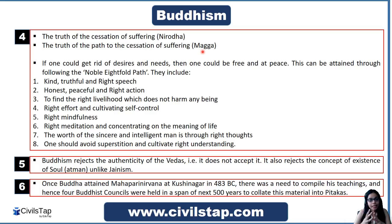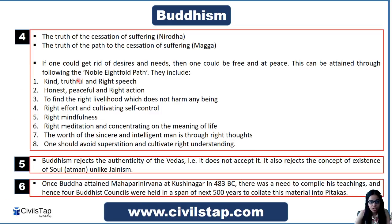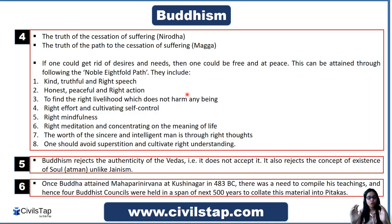To rid oneself of desires so that the Four Truths no longer afflict, Buddha taught the Eightfold Path. This includes: right speech (honest), right action (peaceful), right livelihood, right effort, right mindfulness, right meditation, right thought (through a sincere and intelligent mind), and right understanding — one should avoid superstition and cultivate right understanding. This is the Eightfold Path, through which the desire component can be removed from life.